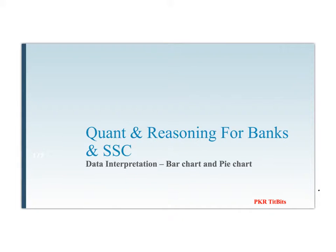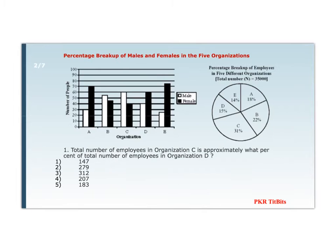Hi friends, today we are going to see data interpretation based on bar chart and pie chart. They have given a percentage-wise breakup of males and females in five organizations A, B, C, D, and E. In the pie chart, they have given the percentage breakup of employees in five different organizations. The total number of employees is 35,000, and the bar chart shows the number of male and female staff in each organization.